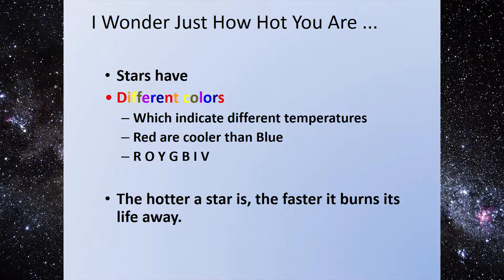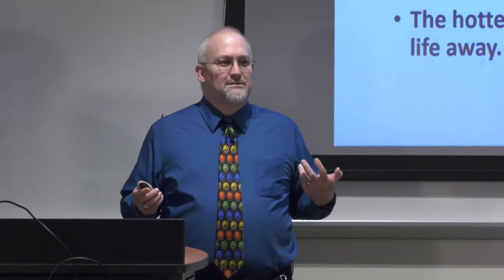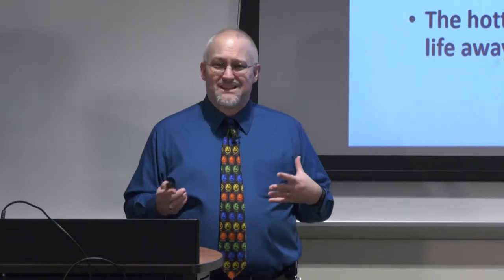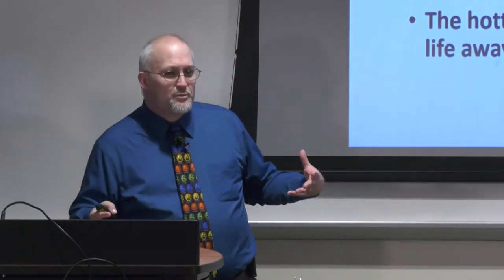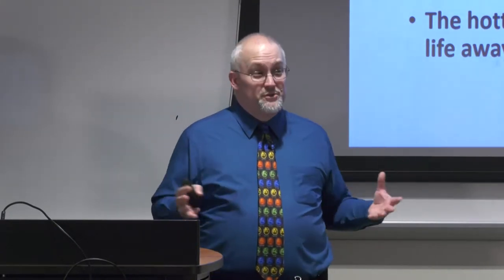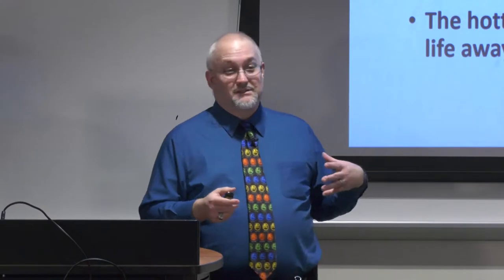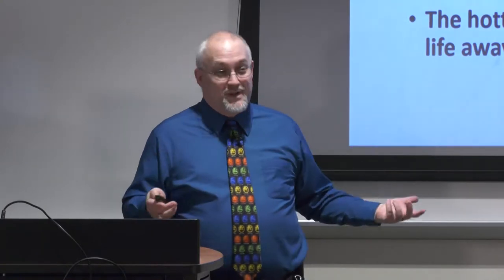We do know that the hotter a star is, the faster it's going to burn. So the stars that burn hottest burn out the fastest. The average energy output doesn't vary a huge amount over a star's lifespan — the really hot ones don't burn as long, while the cooler ones burn much longer, so over their lifespan they have more time to give out that energy.